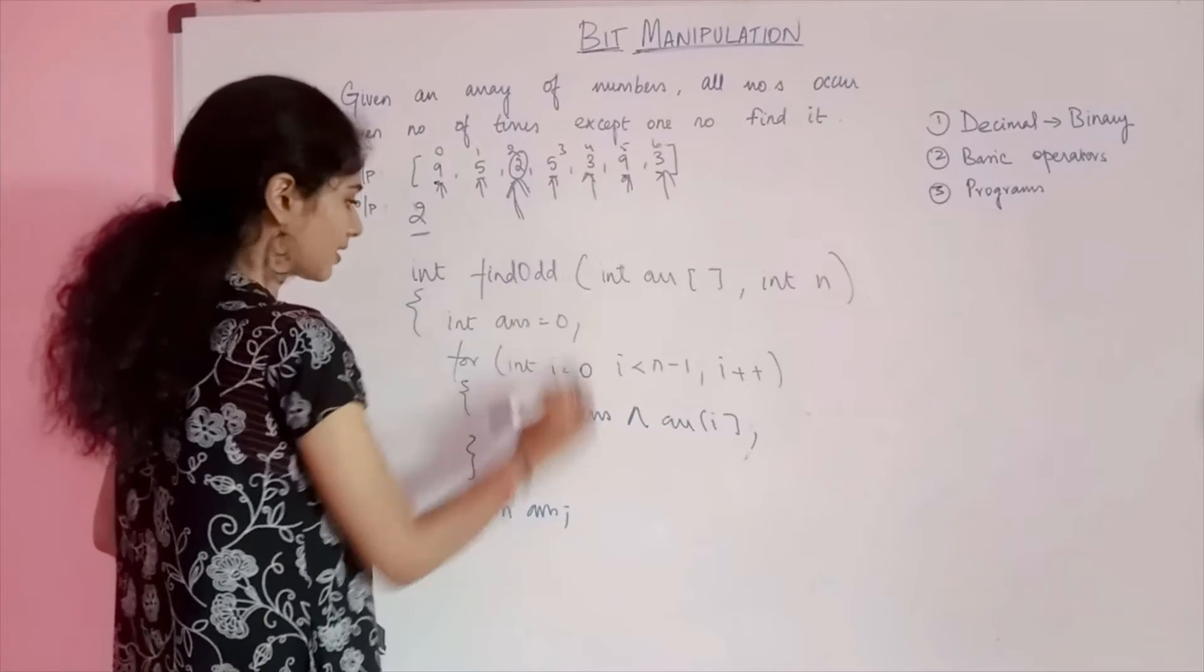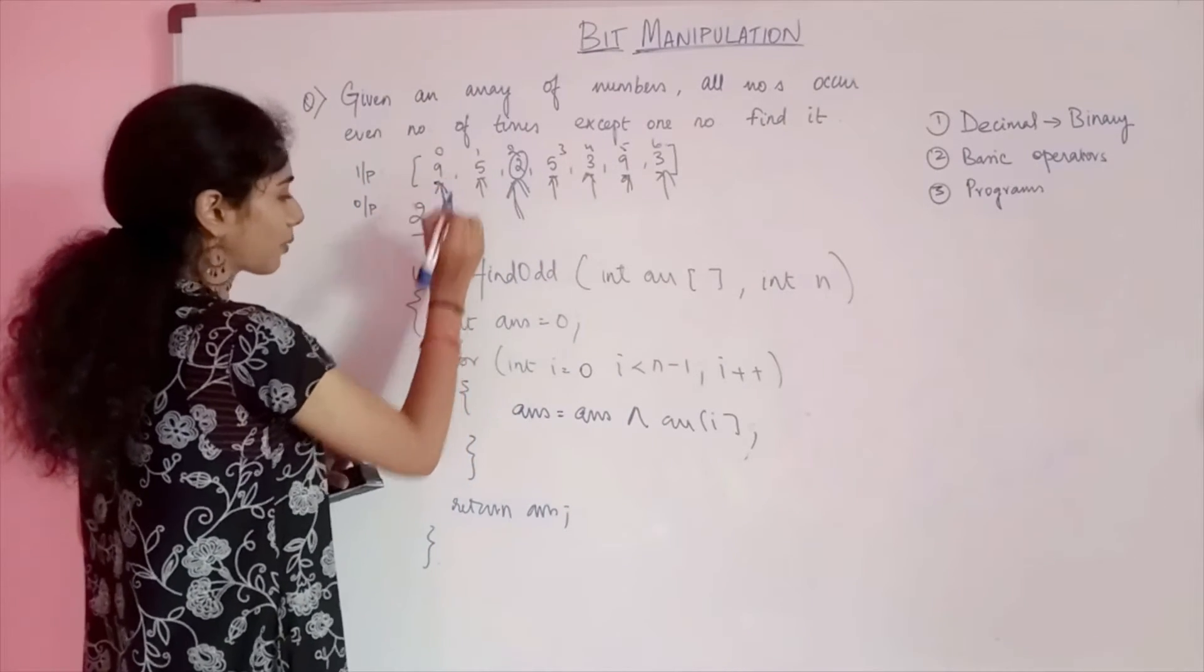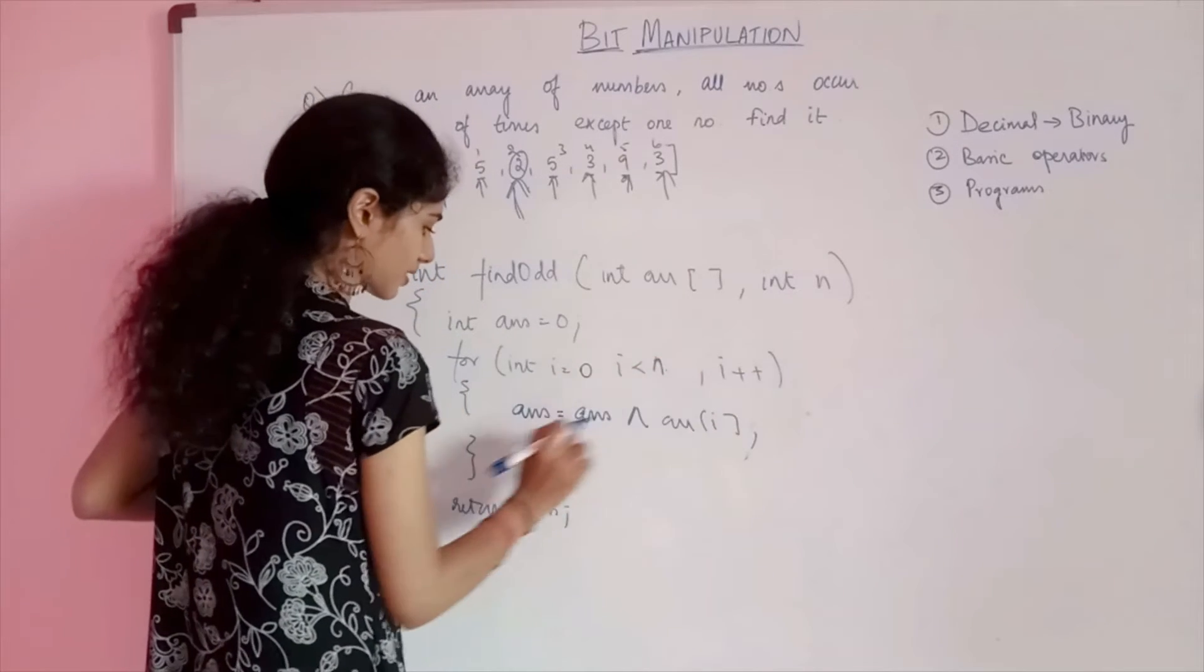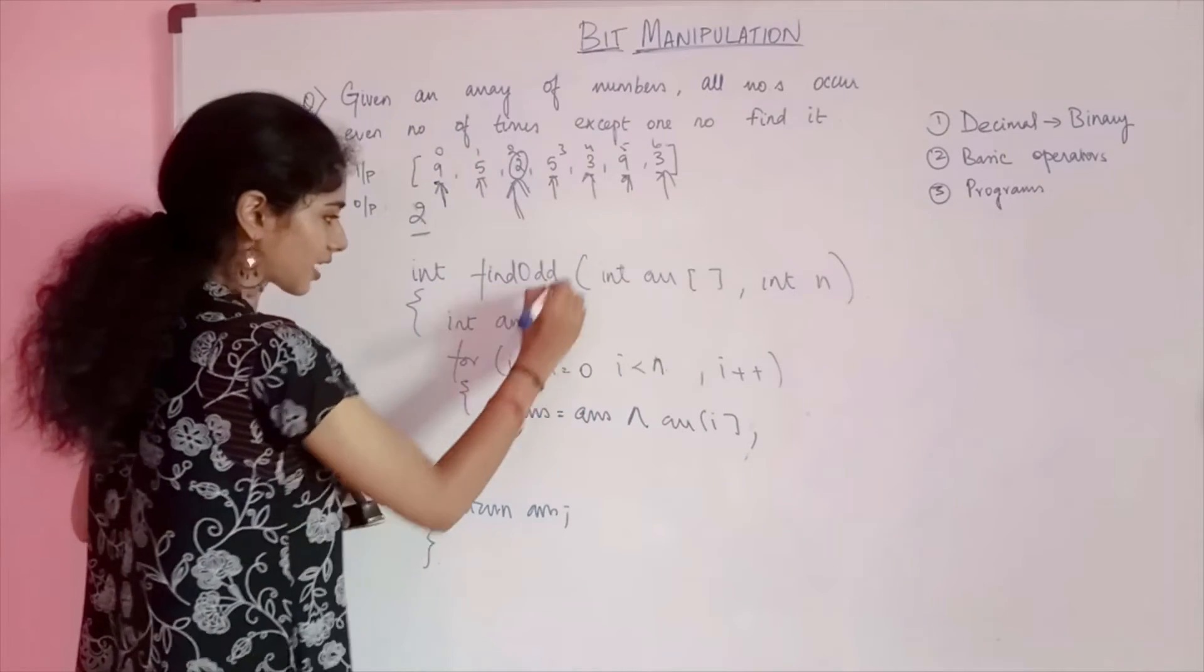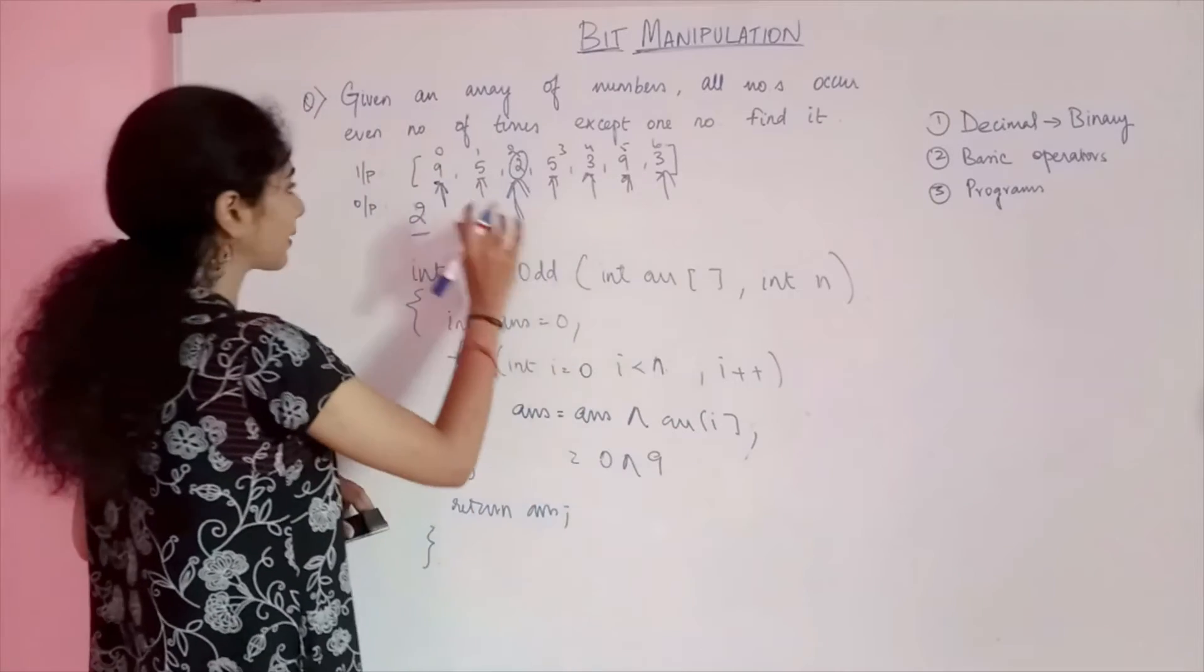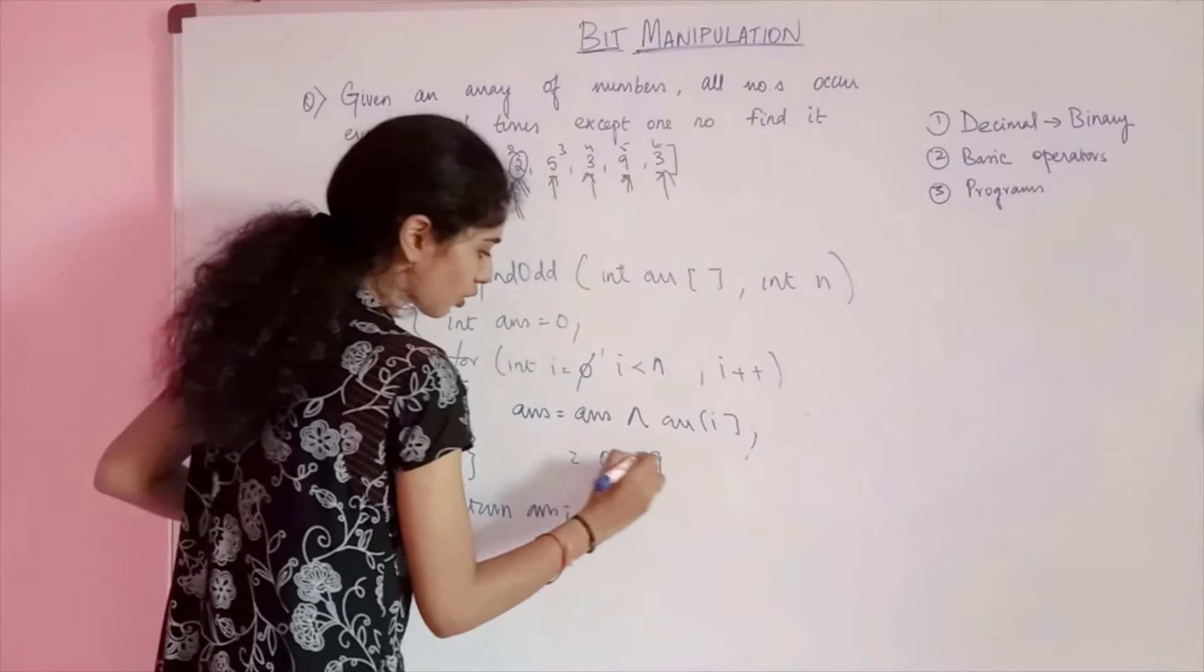What will happen? Let's do a quick trace. For i=0, it will start from here. Initially, answer is going to be 0. So it is 0 XOR 9. Then in the second iteration, i will be 1. This element will be considered, so the answer will be 0 XOR 9 XOR 5.